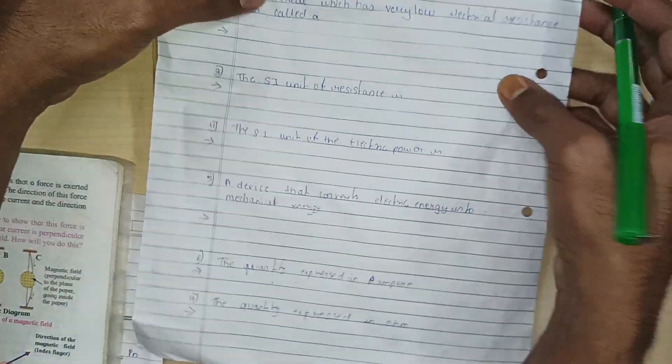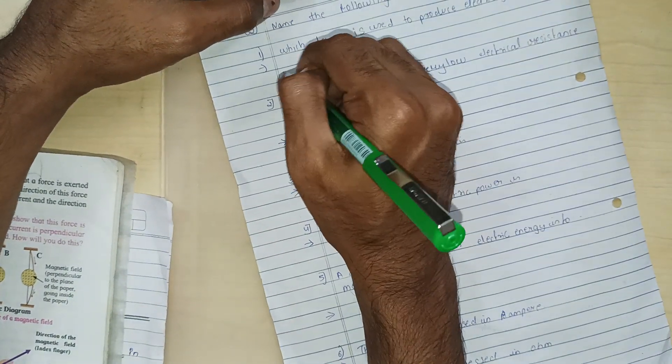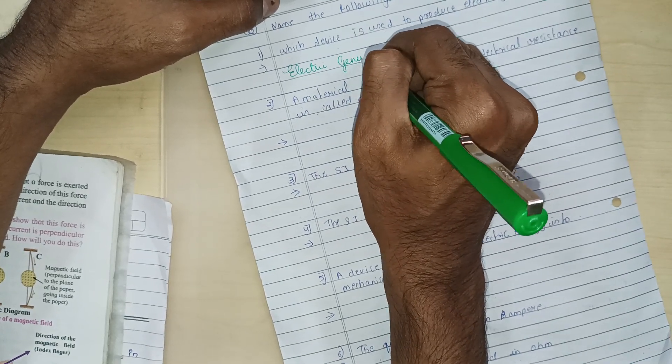So yeah, the very first question that we are going to solve is from name the following. Which device is used to produce electricity? So we know that it's electric generator. Electric generator. Spelling of generator is G-E-N-E-R-A-T-O-R.